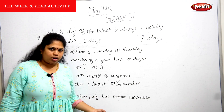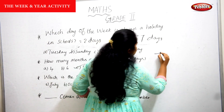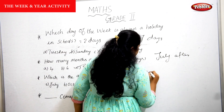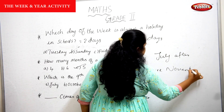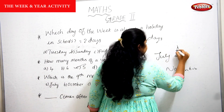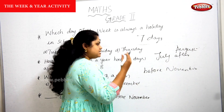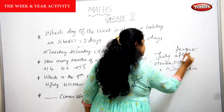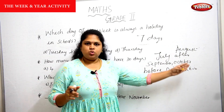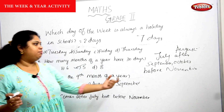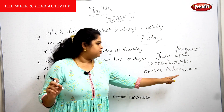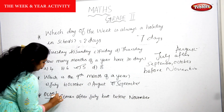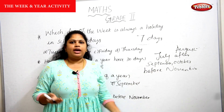Dash comes after July but before November. After July comes August, September, October. Before November is October. So the month that comes after July and before November is October. October is the correct answer.